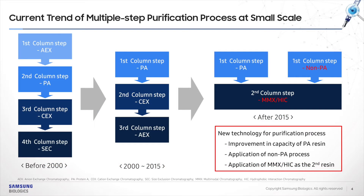This slide describes changes in trends of multiple-step purification processes at small or lab scale. Before 2000, four-step purification was applied for high purity and yield, but resulted in relatively expensive downstream processes and long development time. Between 2000 and 2015, with the development of Protein A resin used for affinity chromatography, a three-step purification platform was established. After 2015, new technologies are being considered, including improvements in Protein A resin capacity, applications of non-PA processes, and applications of MMC/HIC as the second resin.